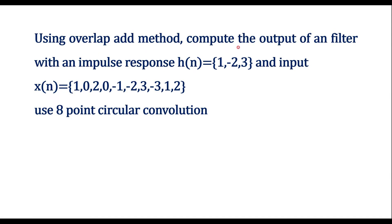Using the overlap-add method, compute the output of a filter with impulse response h[n] = {1, -2, 3} and input x[n] = {1, 0, 2, 0, -1, -2, 3, -3, 1, 2}, using 8-point circular convolution. The length of x[n] is LS = 10 samples.